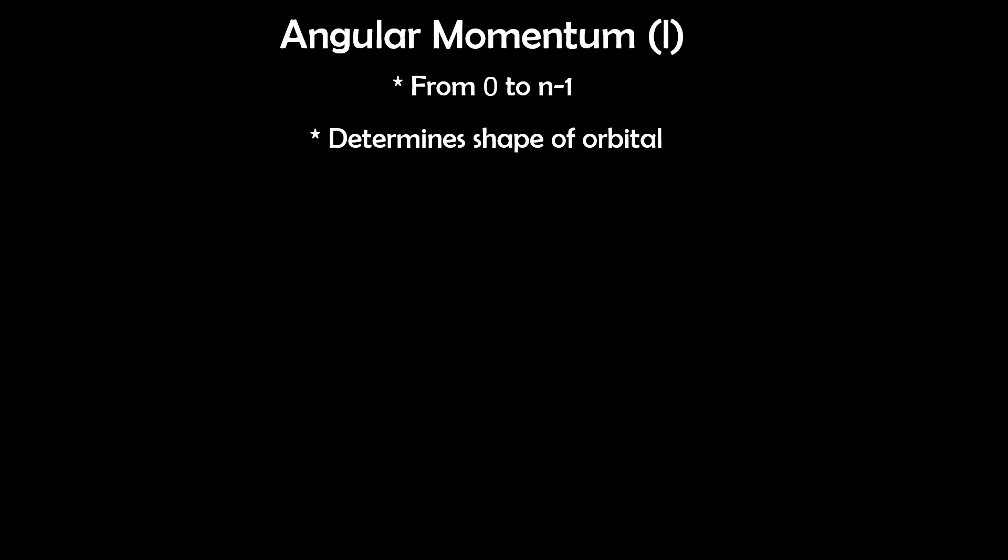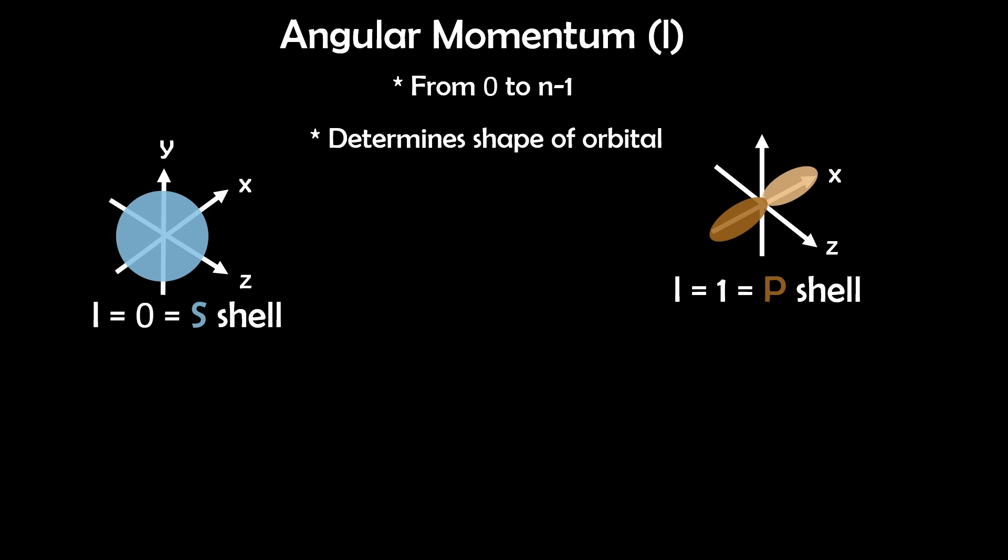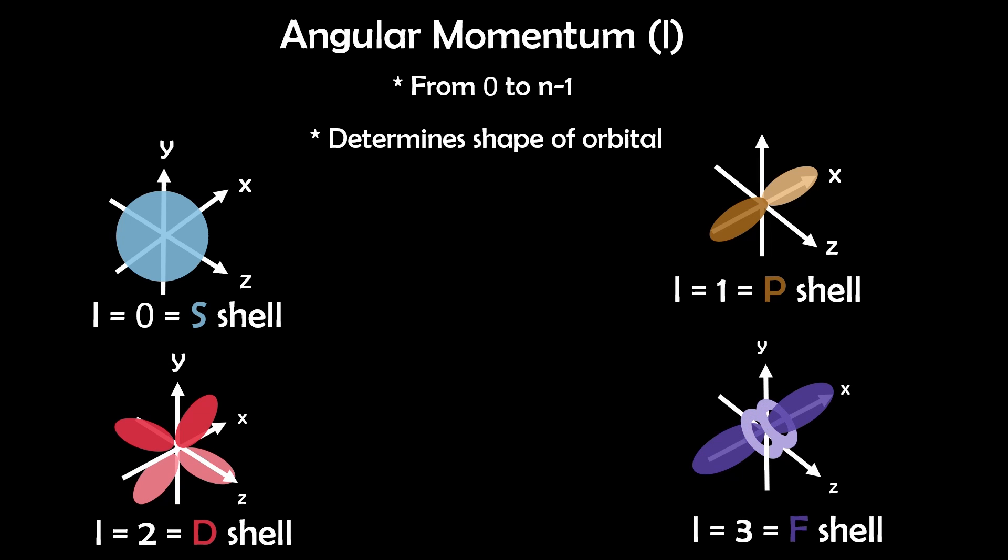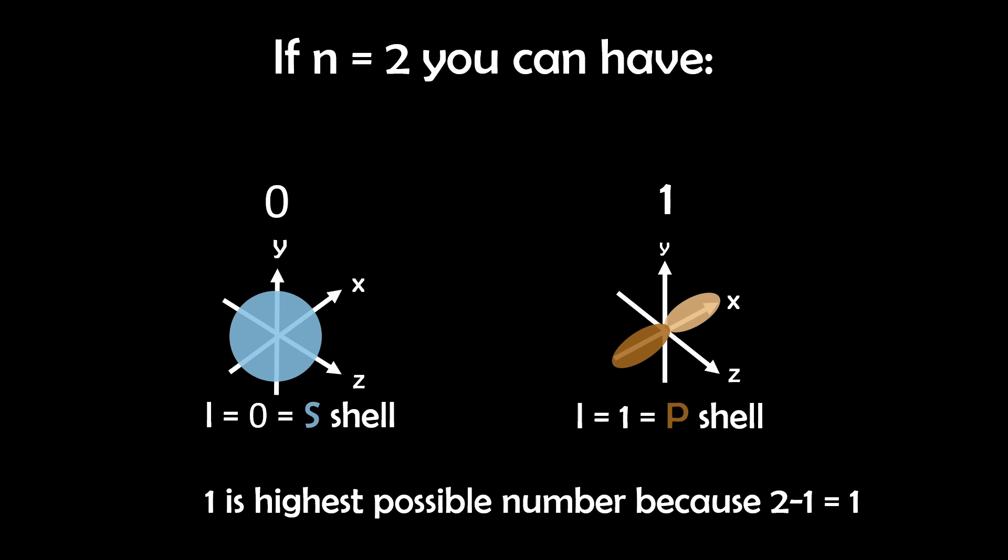The next is the angular momentum quantum number, or L, ranging from 0 to n minus 1, and it determines the orbital shape. An L value of 0 describes the S orbitals, 1 for P orbitals, 2 for D orbitals, and 3 for F orbitals, each with different shapes and configurations. So if n was 2, you could have 0 or 1, but not 2 or higher because remember it's n minus 1.